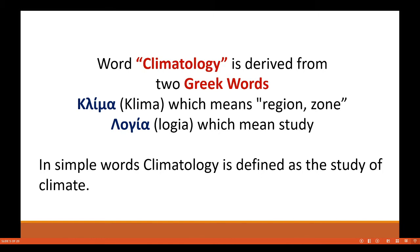Let us understand the terminological meaning of climatology. The word climatology is derived from two Greek words: klima and logia. Klima means region or zone, and logia means study. Hence, in simple words, climatology can be defined as the study of climate.